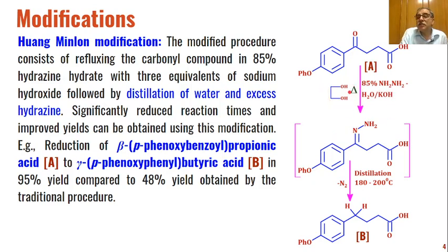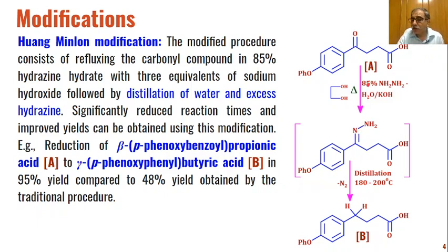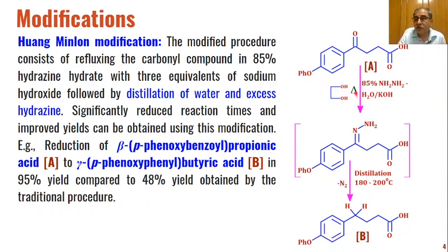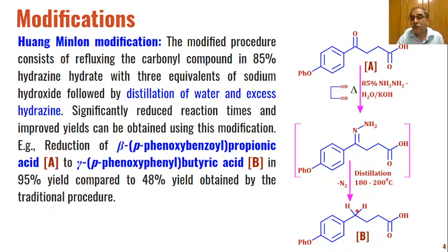Ethylene glycol acts as solvent. On heating, distillation of water and excess hydrazine is done to minimize side products. The excess hydrazine and water are eliminated, and the hydrazone is converted into methylene compounds. For example, in a compound having both an acidic functional group and a keto group, the acid group remains intact and only the carbonyl group is reduced — this is selective reduction.